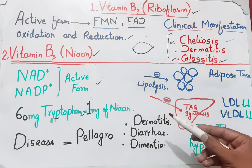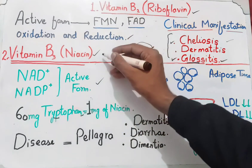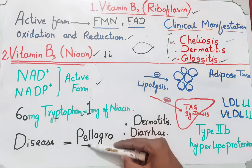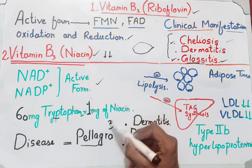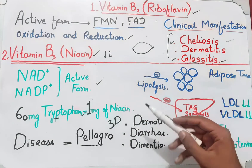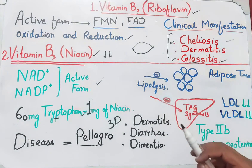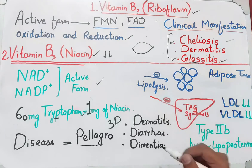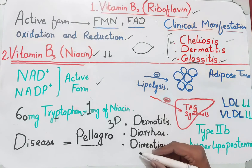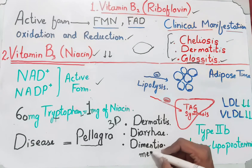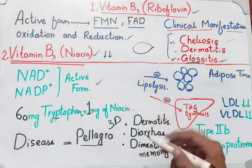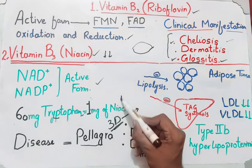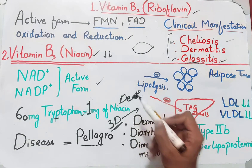From a disease perspective, deficiency of vitamin B3 leads to pellagra. Pellagra is represented by three Ds: number one is dermatitis — inflammation of the skin with photosensitivity; number two is diarrhea — loose stool passing; and number three is dementia — memory loss. If the condition progresses, it can lead to a fourth D: death.